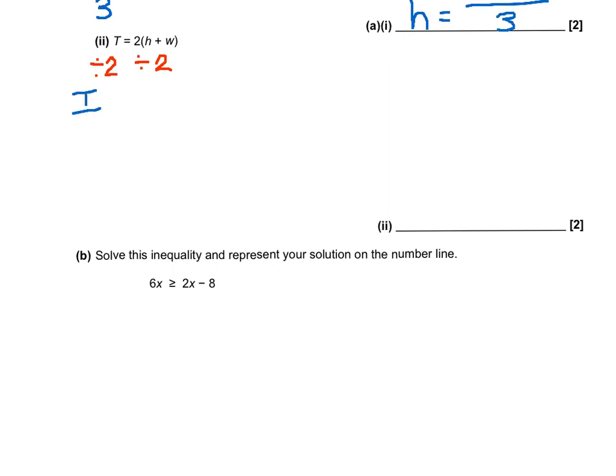If we do that, on the left-hand side, we're left with T divided by 2 equals, and on the right-hand side, the 2's disappeared to leave us with just h plus w.